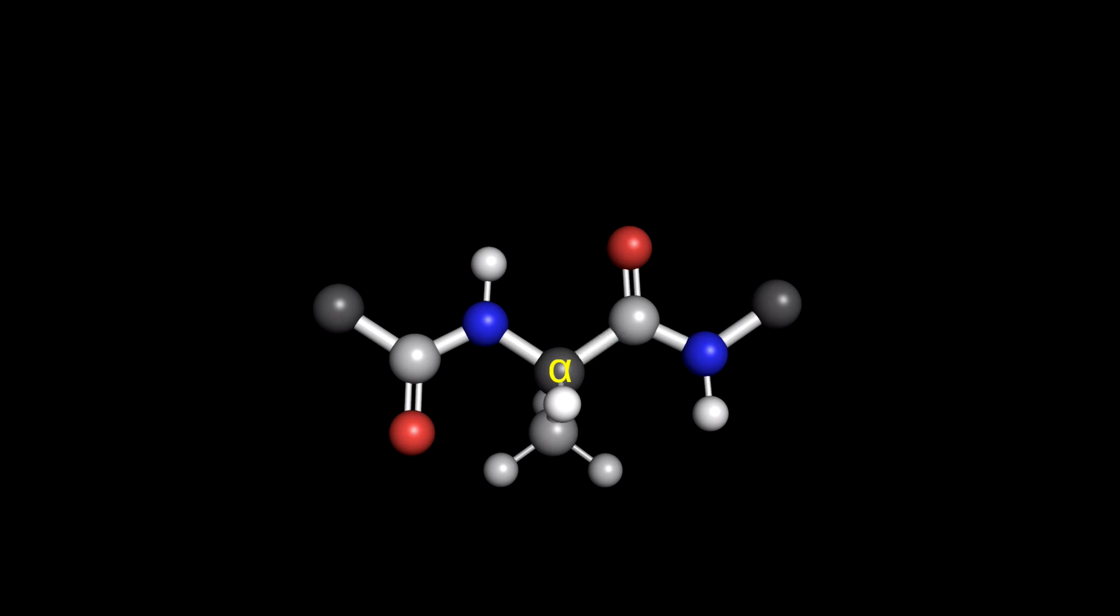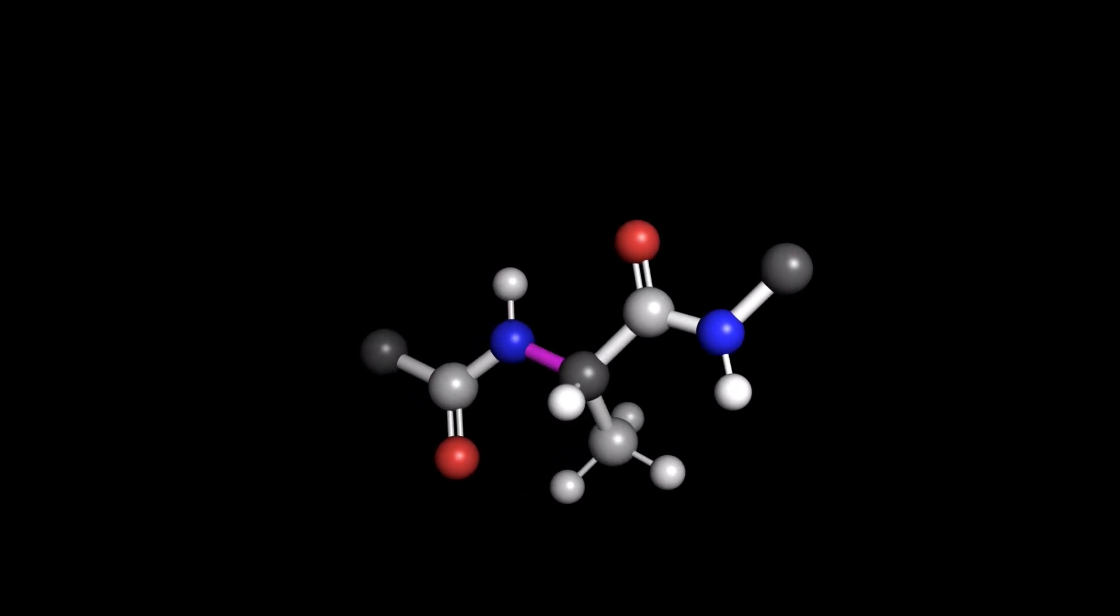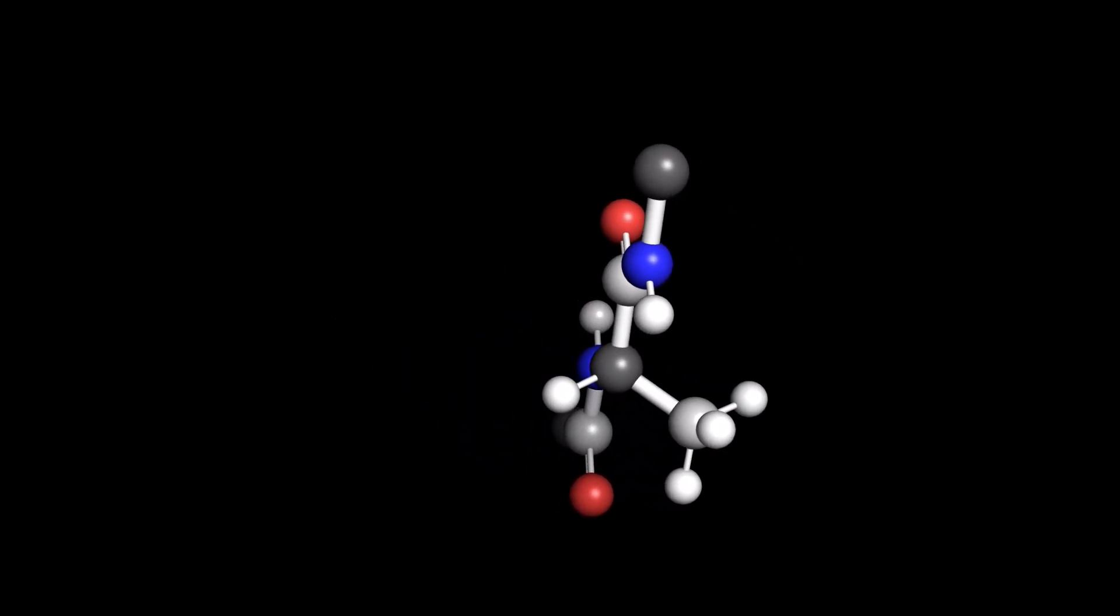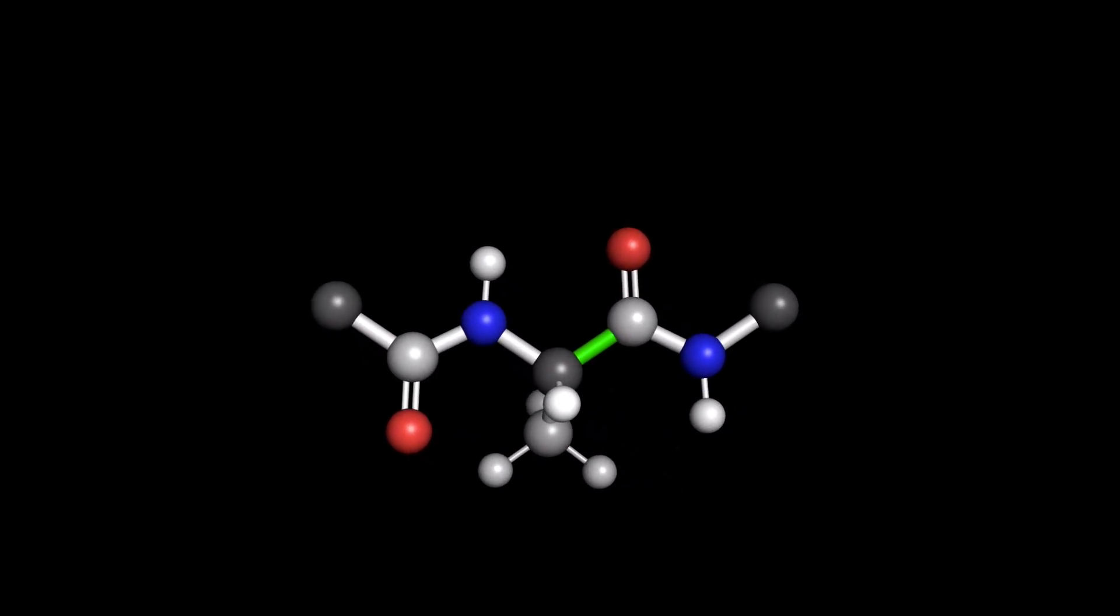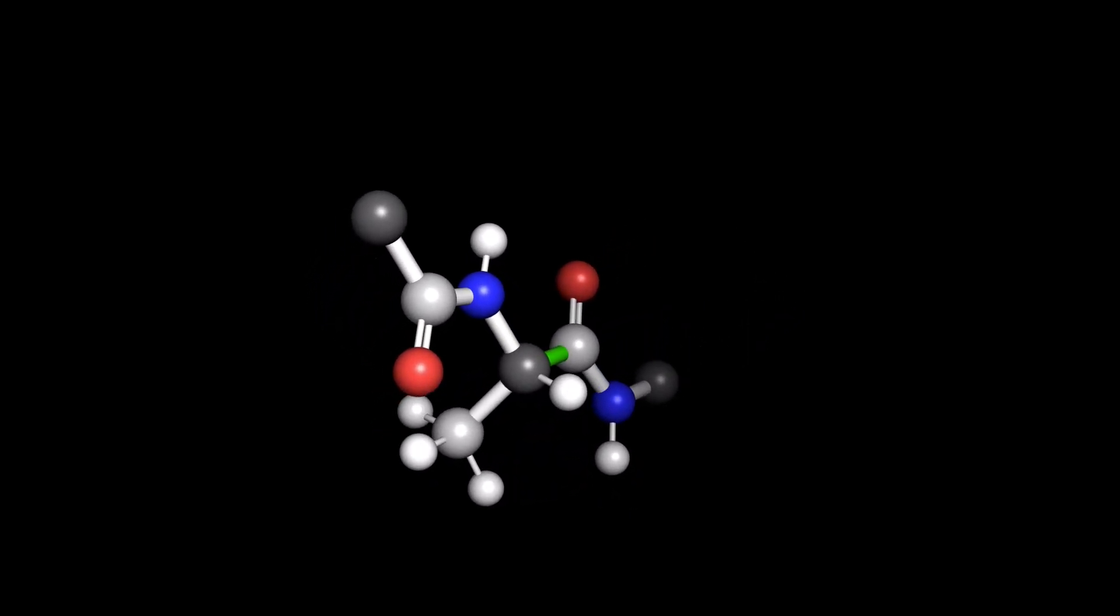In order to understand the angles, we need to set this up by looking straight at the alpha carbon directly down the bond of interest. So, if we're looking for the Φ angle, we'll orient the structure like this. And, if we're considering the ψ angle, we'll have to orient the structure like this.